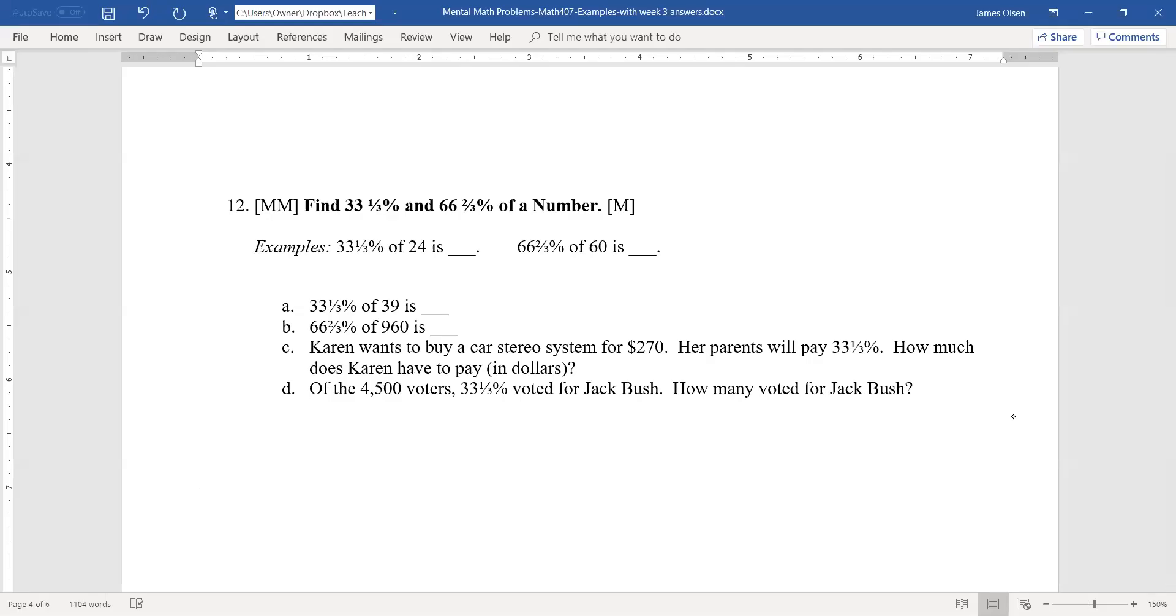33 and 1/3 percent is equal to 1/3. Double of that is 66 and 2/3 percent, which is therefore 2/3. In the first example,